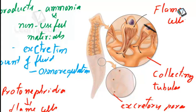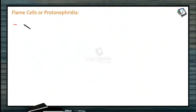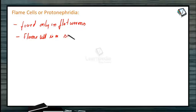These flame cells collect excreta from the mesenchyme and send it out through the excretory pores present on the body surface. These are found only in flatworms.